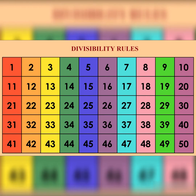Divisibility by 7 – we need to double the last digit of the number and then subtract it from the remaining number. If the result is divisible by 7, then the original number will also be divisible by 7.